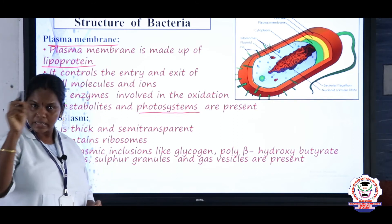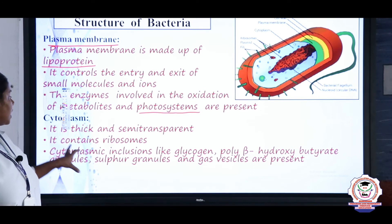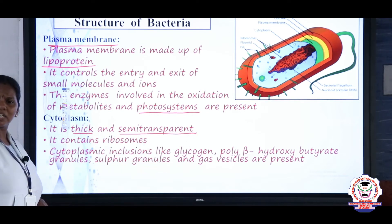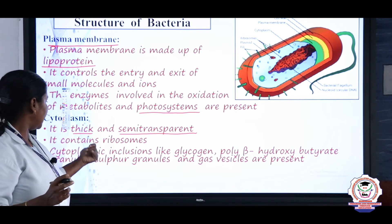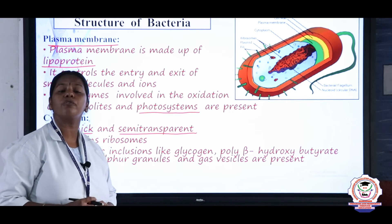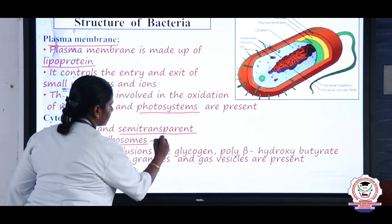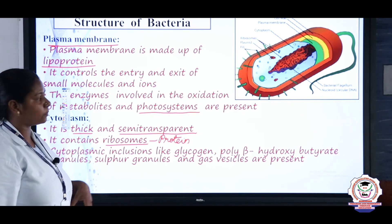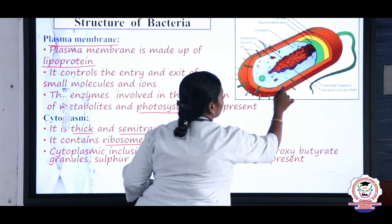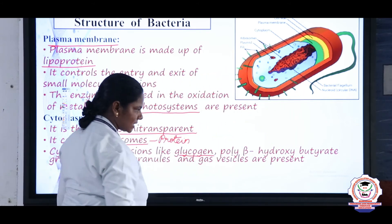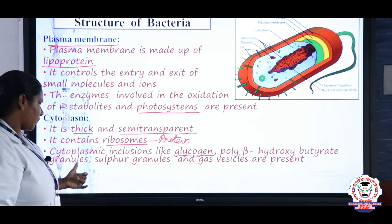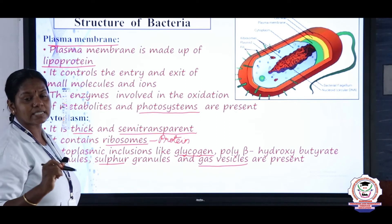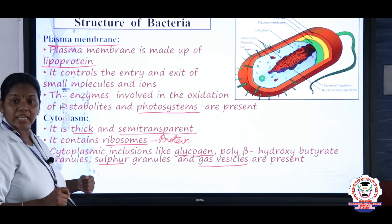The cytoplasm is thick and semi-transparent, meaning it is not fully clear. It contains ribosomes, which are responsible for protein synthesis. The inclusions present throughout the cytoplasm include glycogen (a polysaccharide), poly-beta-hydroxybutyrate granules, sulfur granules, and gas vesicles.